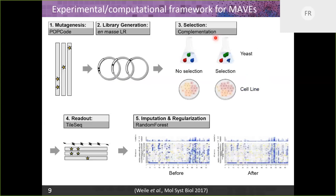The framework we mostly follow uses a mutagenesis method we call pop code, which is a scaling-up of a previously developed oligo-directed mutagenesis method. We do oligo-directed codon mutagenesis where, for every codon, an oligo is made and the central three bases are an NNK degenerate sequence — a degeneracy that can get you all 20 amino acids and only one stop codon. The PCR amplicon is mutagenized, and then that library is moved en masse into a vector using the gateway system.